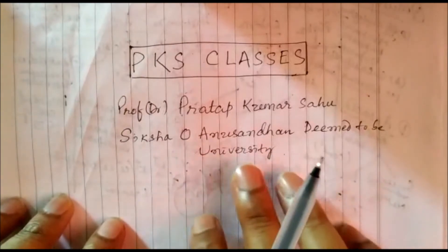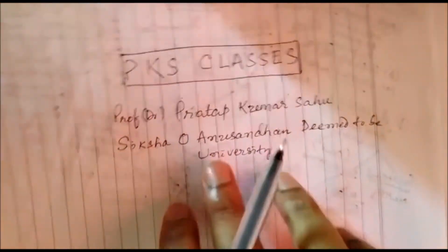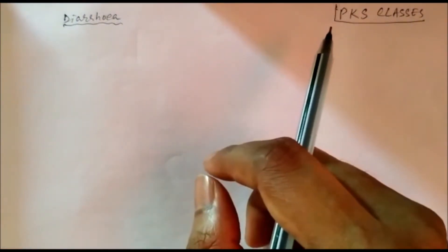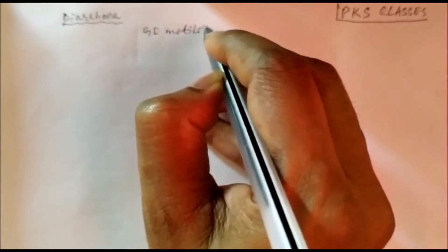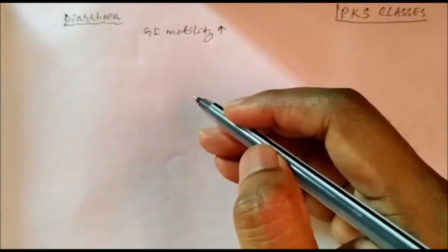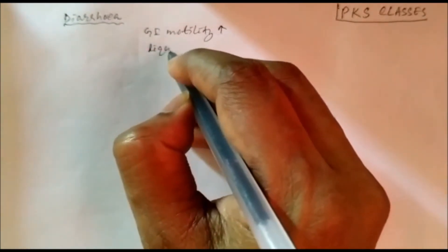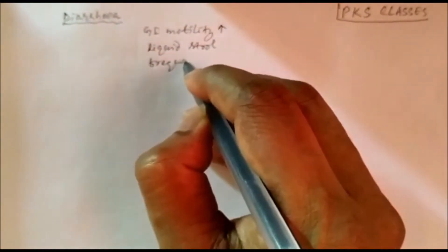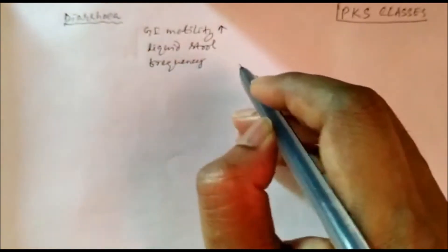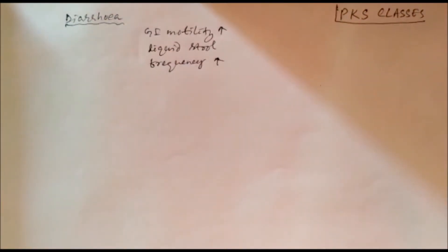Welcome to PKS Classes. Today we will study drugs used for diarrhea. Diarrhea is a condition in which gastrointestinal motility increases, there is liquid stool, and the frequency also increases — more than three times per day. If frequency increases beyond that, we call it diarrhea.